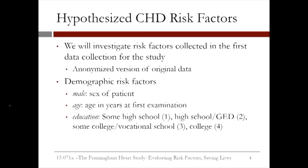In this lecture, we'll focus on the risk factors that they collected data for in the original data collection for the Framingham heart study. We'll be using an anonymized version of the original data. This data set includes several demographic risk factors: the sex of the patient (male or female), the age of the patient in years, and the education level coded as either one for some high school, two for a high school diploma or GED, three for some college or vocational school, and four for a college degree.